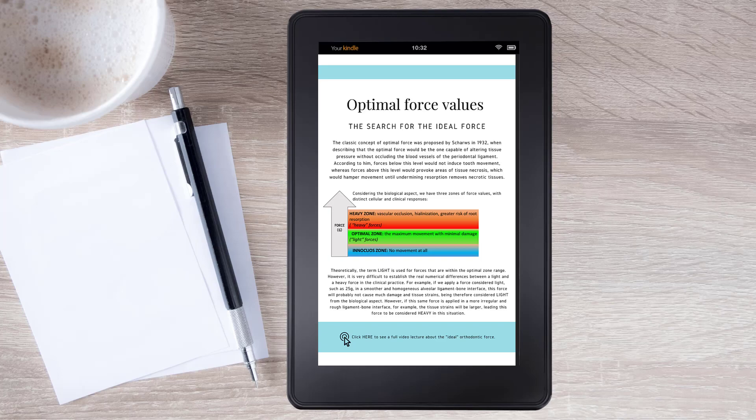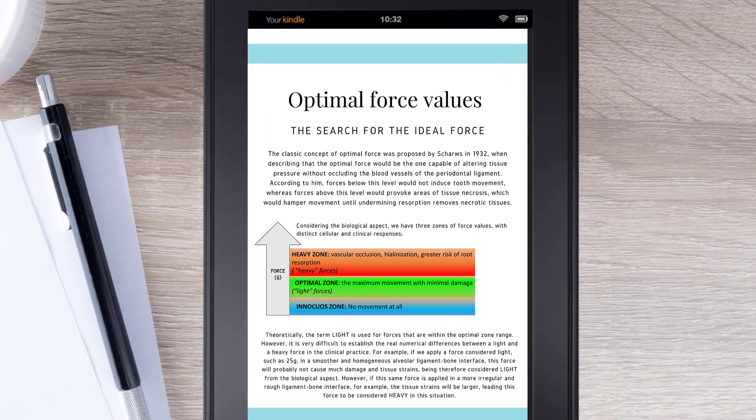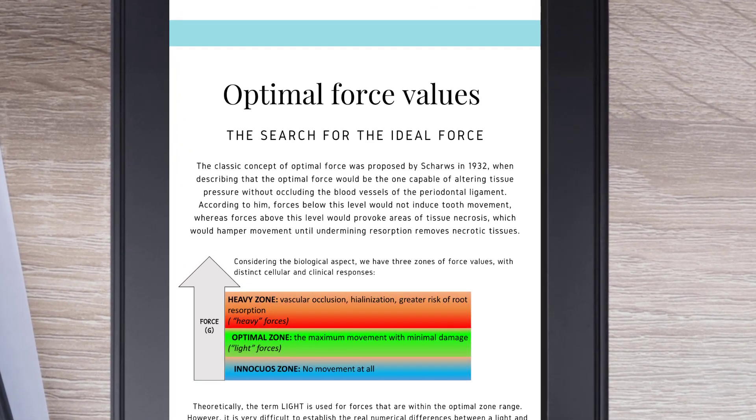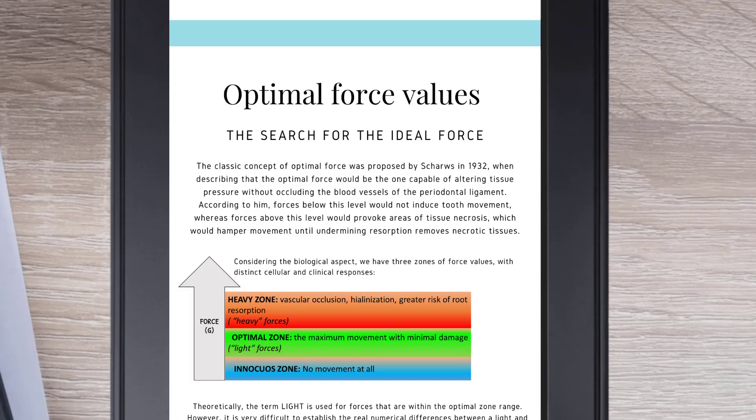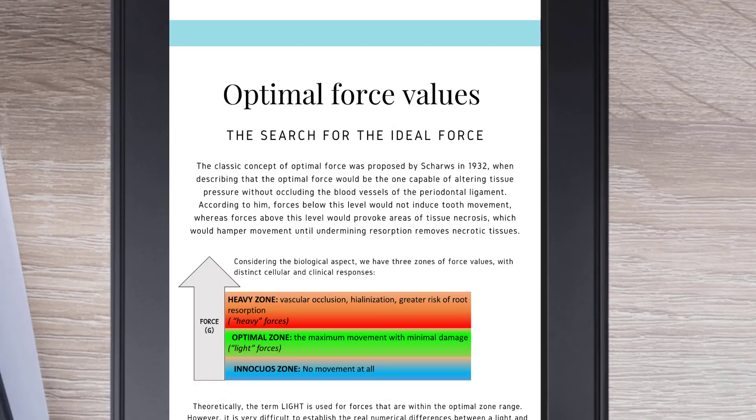Optimal force values. The search for the ideal force. The classic concept of optimal force was proposed by Schwarz in 1932, when describing that the optimal force would be the one capable of altering tissue pressure without occluding the blood vessels of the periodontal ligament. According to him, forces below this level would not induce tooth movement, whereas forces above this level would provoke areas of tissue necrosis, which would hamper movement until undermining resorption removes necrotic tissues.